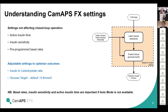Just an overview of the CAM APS FX settings: the things that don't affect closed loop operation are the active insulin time, the insulin sensitivity, and the pre-programmed basal rates. These are all important particularly when you're not in auto mode, because they will influence delivery, but when you're in auto mode those things don't make a difference — and that's different to other closed loop settings. The adjustable settings which can be used to optimise outcomes include the insulin to carbohydrate ratio and the glucose targets. The default glucose target for this system is 5.8 but we'll talk about how that can be adjusted to benefit the user.